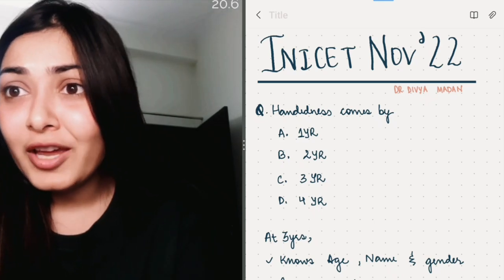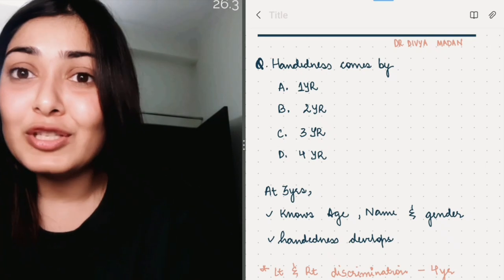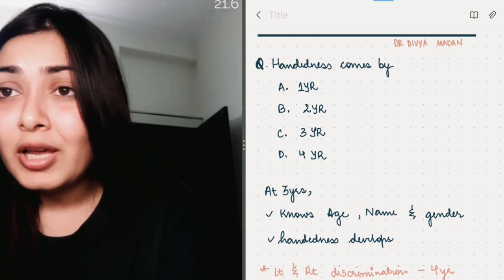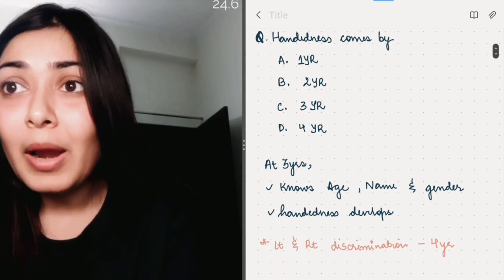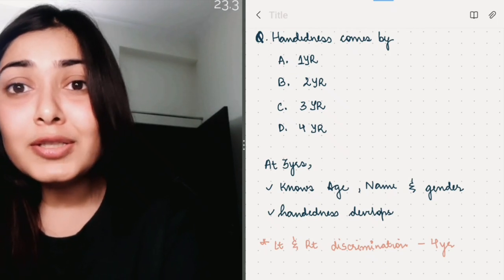So the first question I came across was a milestone question. Again, a previous year question, a very predicted one that there would be a milestone question. This time they asked at what time handedness comes. So handedness comes by 3 years.